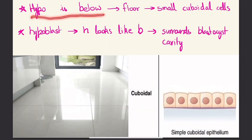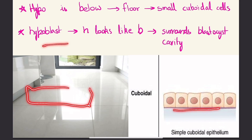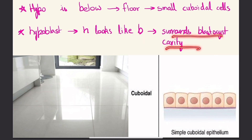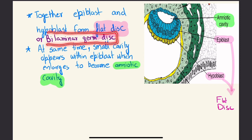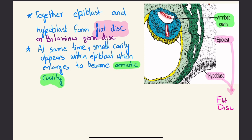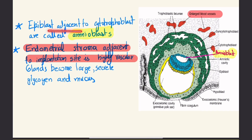The word hypoblast: 'hypo' means below, and below we have the floor with small cuboidal cells — like tiles — which resemble the cuboidal cells of the hypoblast. Hypoblast surrounds the blastocyst cavity. Together, epiblast and hypoblast form the flat disc called the bilaminar germ disc. A small cavity appears within the epiblast which enlarges to become the amniotic cavity. Epiblast cells adjacent to the cytotrophoblast are called amnioblasts.